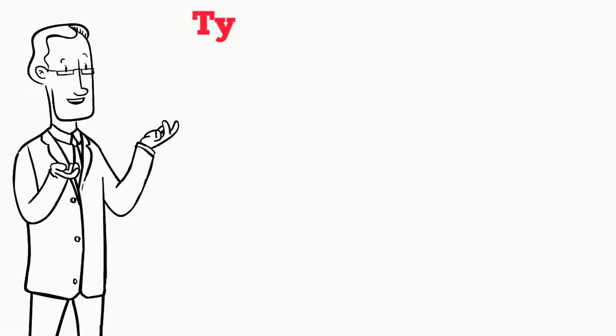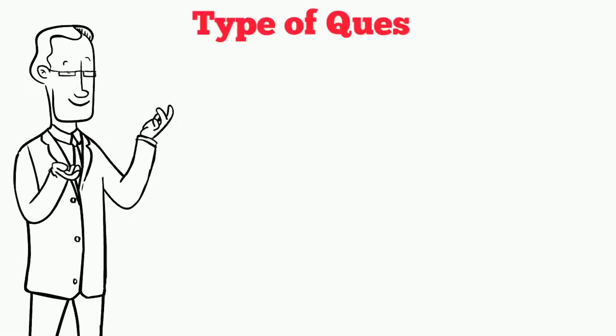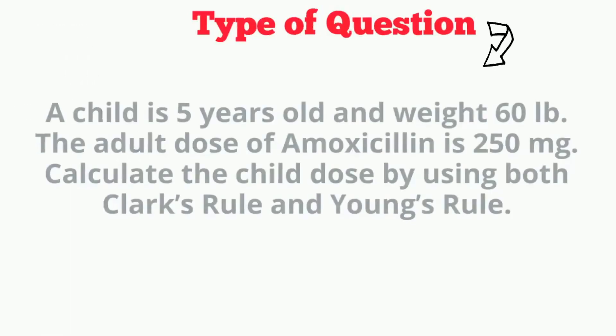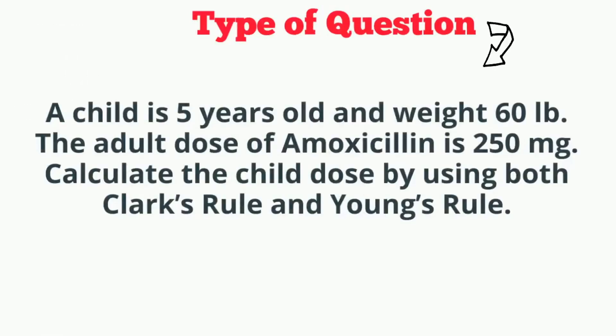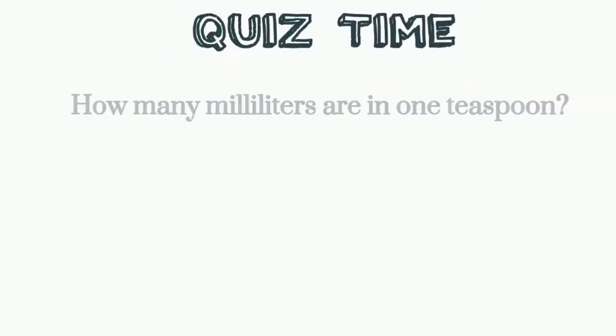Let's look at the kind of question you might see on the test: A child is five years old and weighs 60 pounds. The adult dose of amoxicillin is 250 milligrams. Calculate the child's dose using both Clark's Rule and Young's Rule.